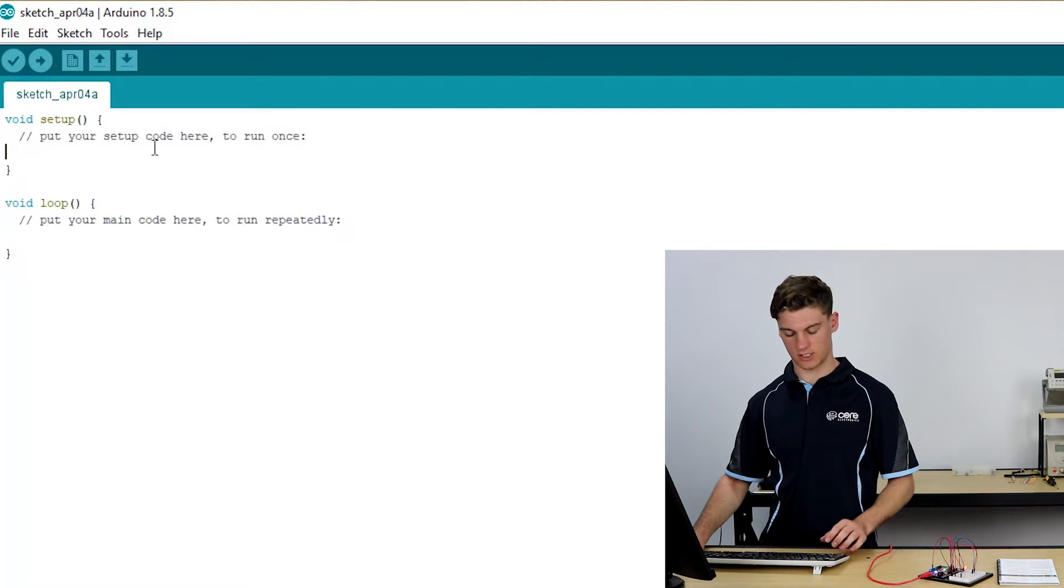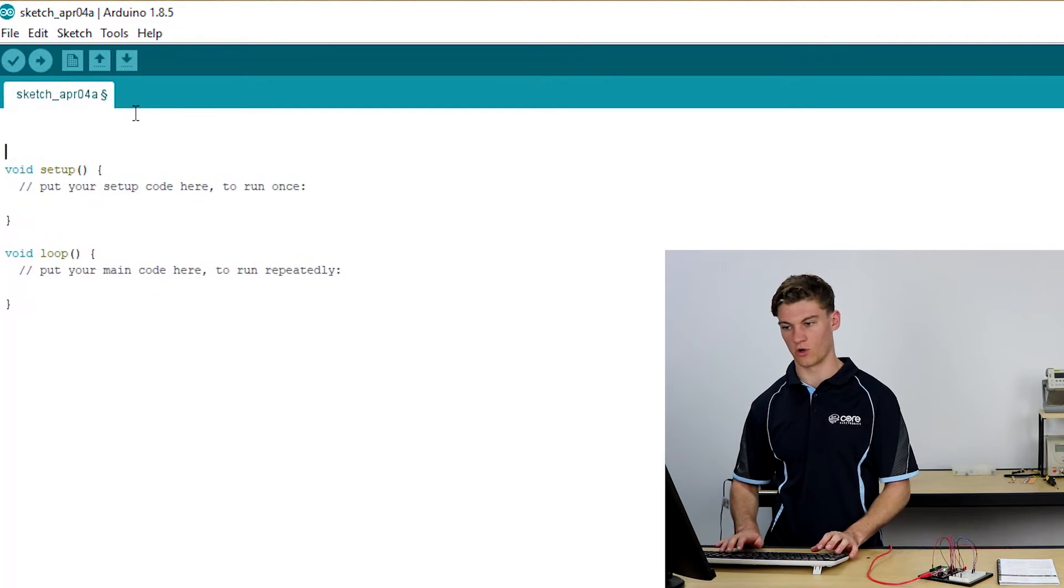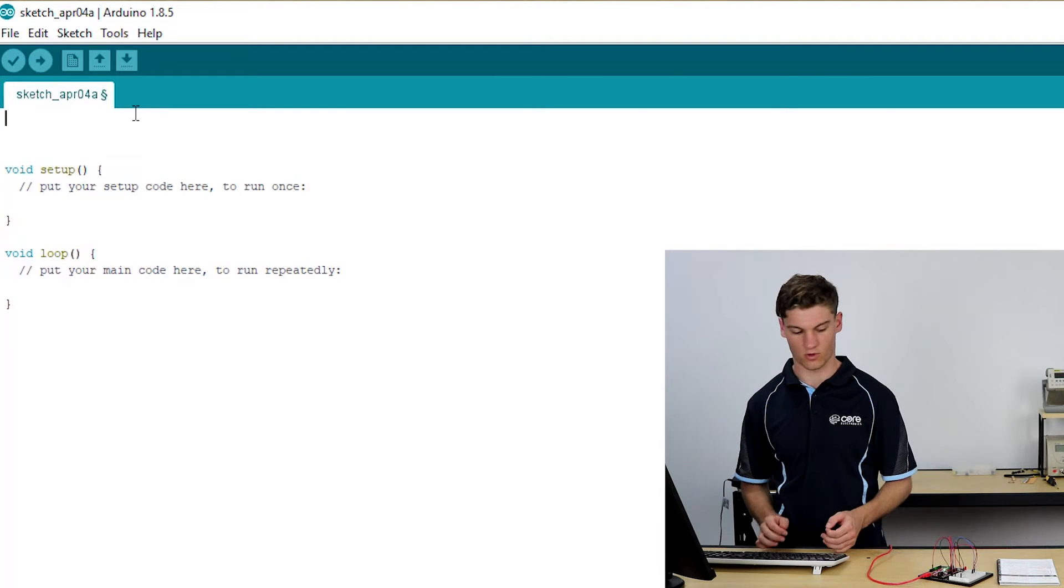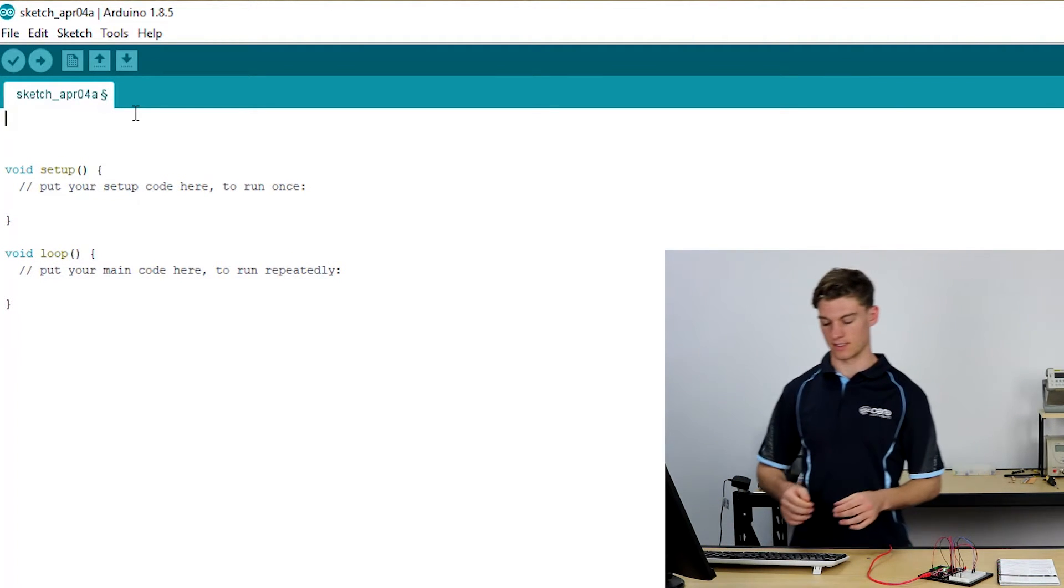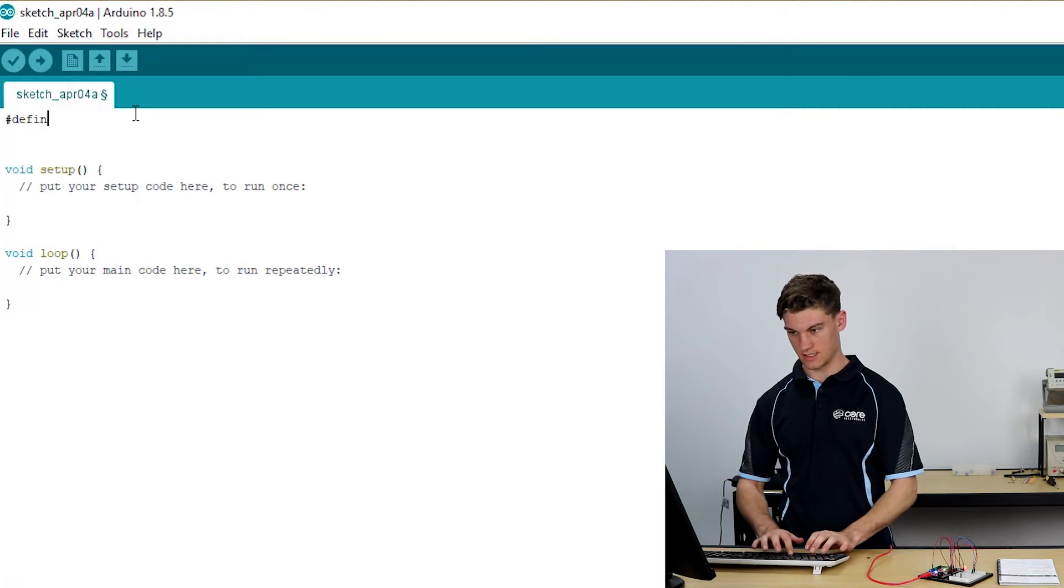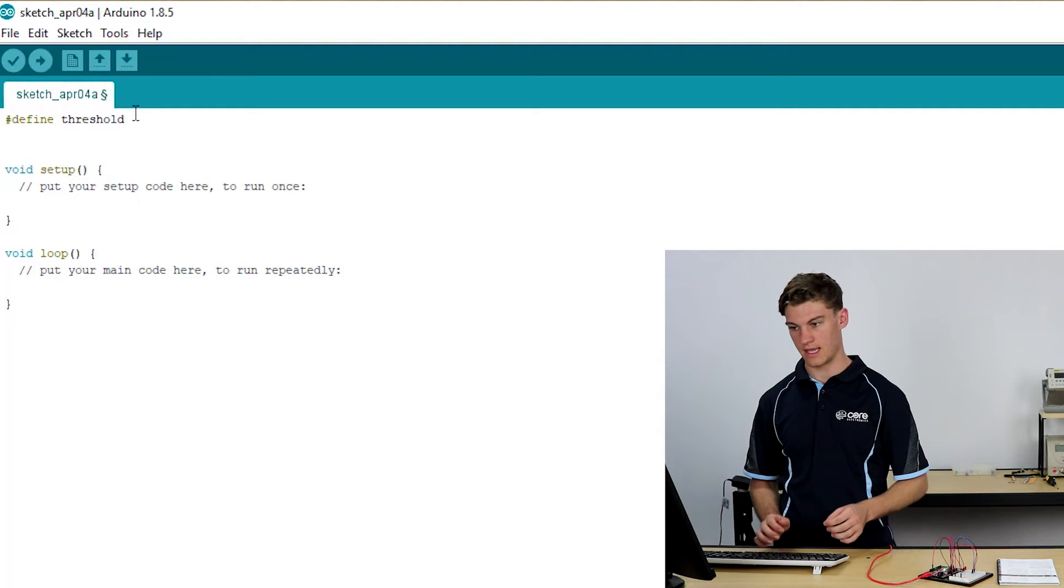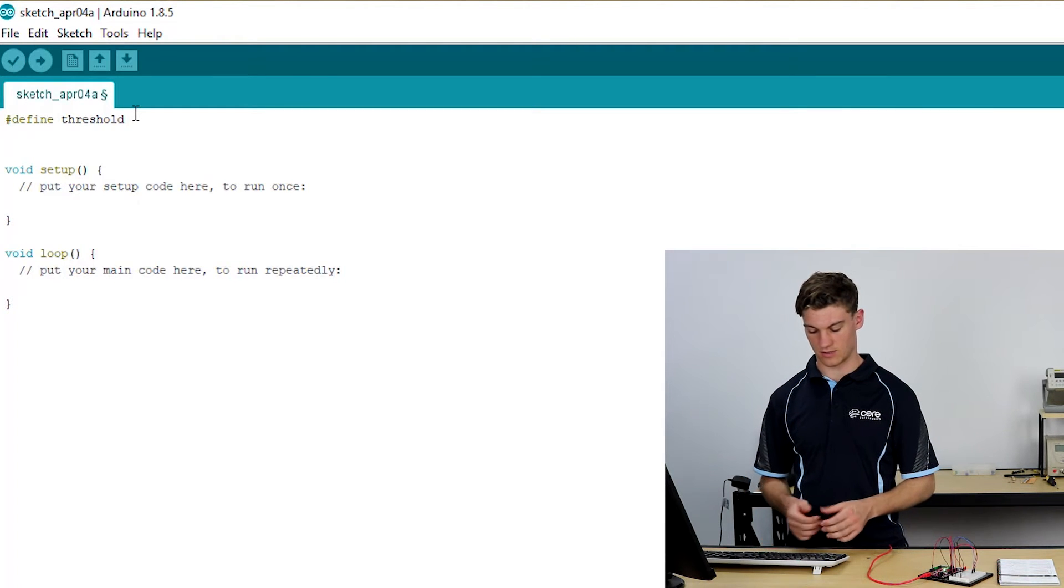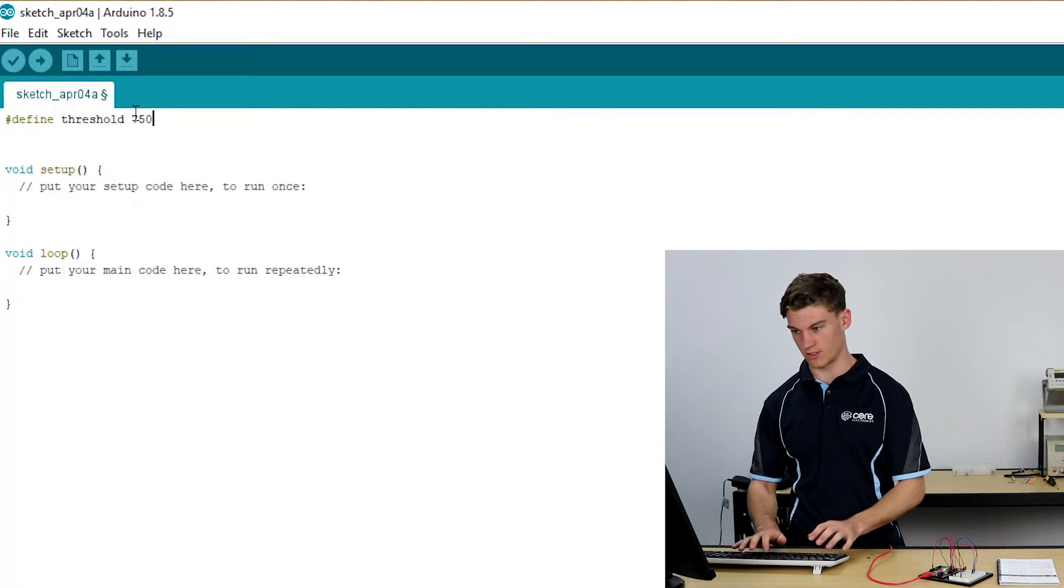So opening a new sketch, what we're going to do at the start is we're going to declare a global variable or a global constant. So we're going to hit hash define and we're going to call it threshold. So as this threshold we're going to use 750.